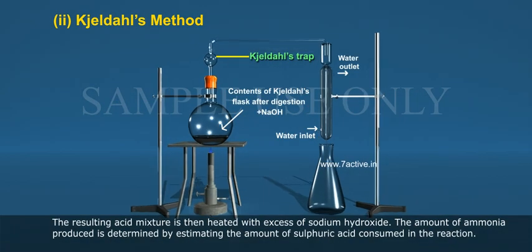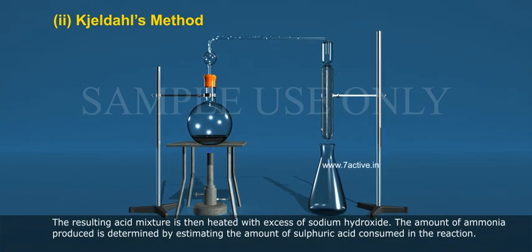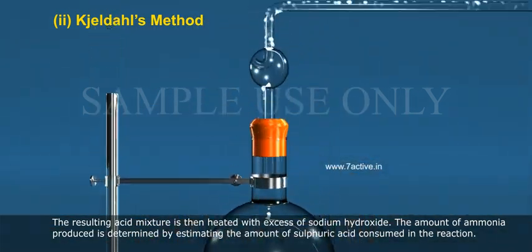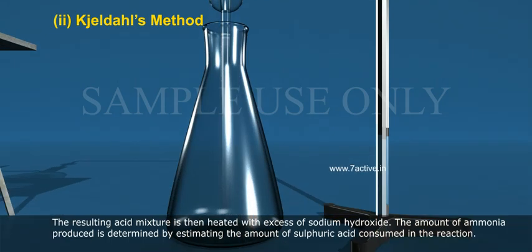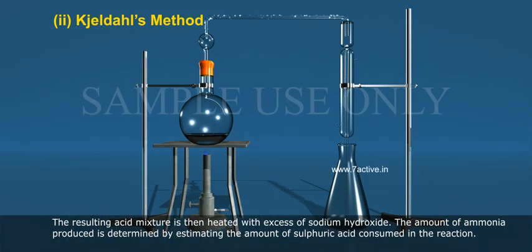The resulting acid mixture is then heated with excess of sodium hydroxide. The amount of ammonia produced is determined by estimating the amount of sulfuric acid consumed in the reaction.